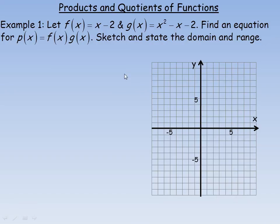In this lesson we're going to take a look at products and quotients of functions. In the first example, we're given that f of x is x minus 2 and g of x is x squared minus x minus 2. We're asked to find the equation for p of x, which is defined to be f of x times g of x, and then sketch and state the domain and range of the function.